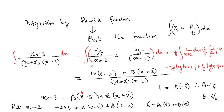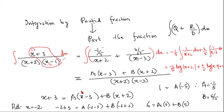Now I'll show you a shortcut — a very fast method to mentally get A and B. If you notice, when I put x = −2, only two terms remained. That means if I directly replace x by −2 in the remaining expression (after removing A's denominator factor), I should directly get the value of A.